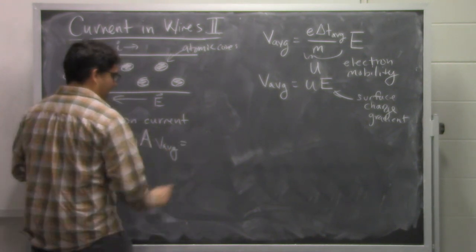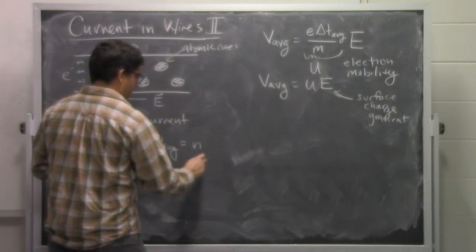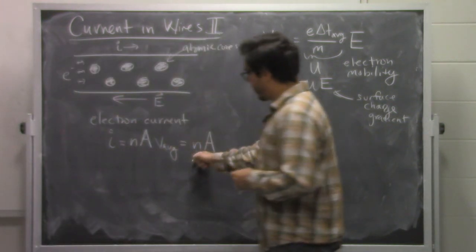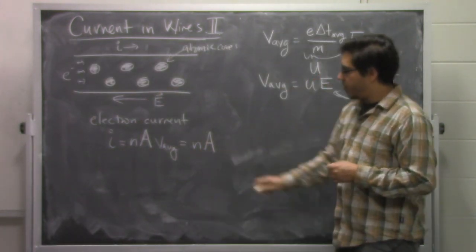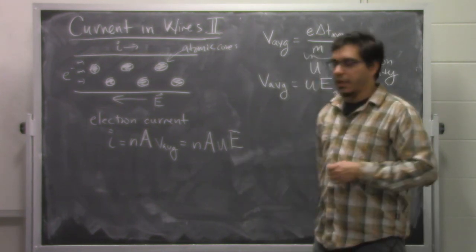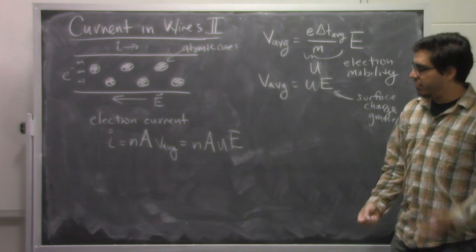So this tells us that, given our model that we've developed, that the electron current is associated with the number density of those charges, the cross-sectional area, the electron mobility, and the electric field that is applied as a result of the surface charge gradient.